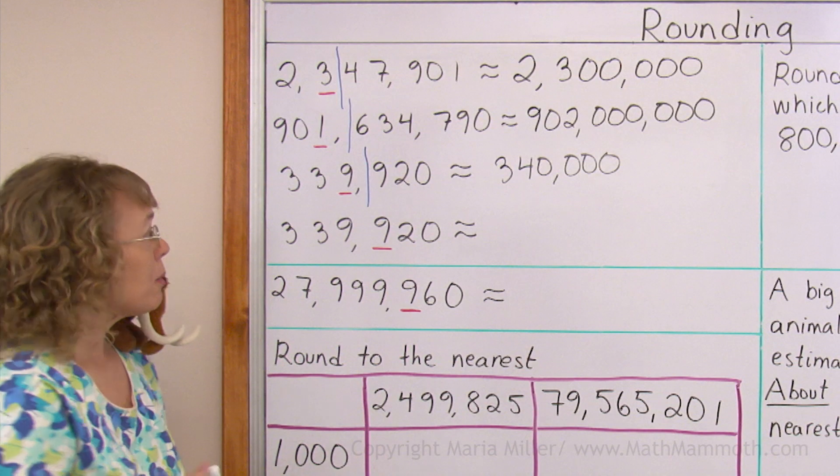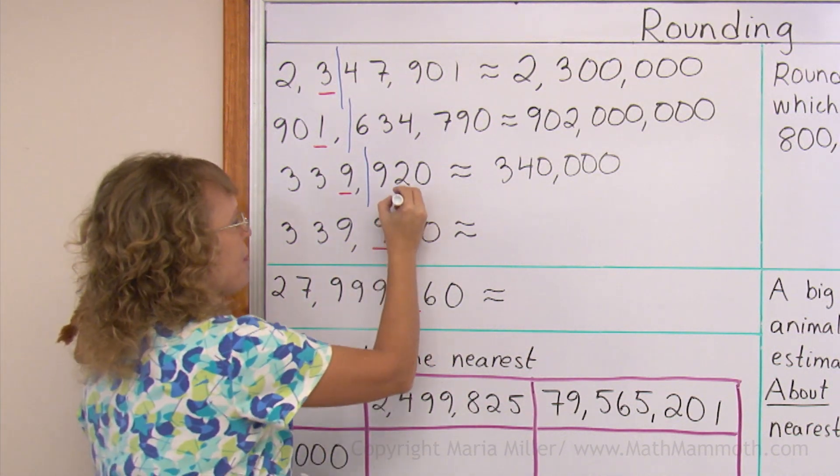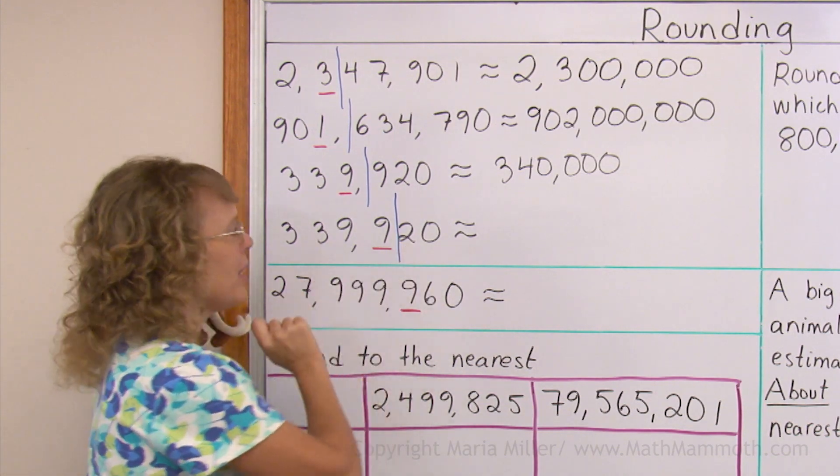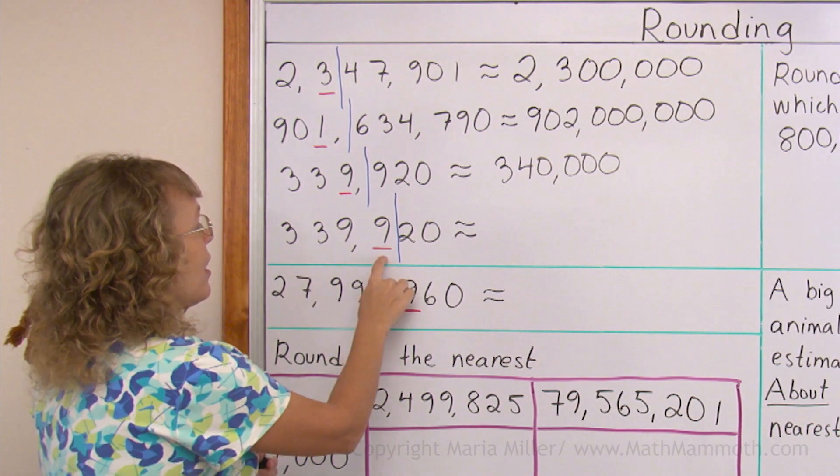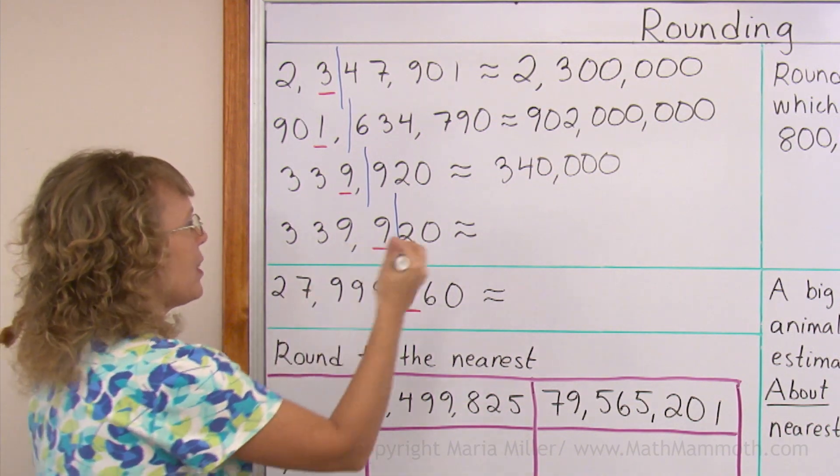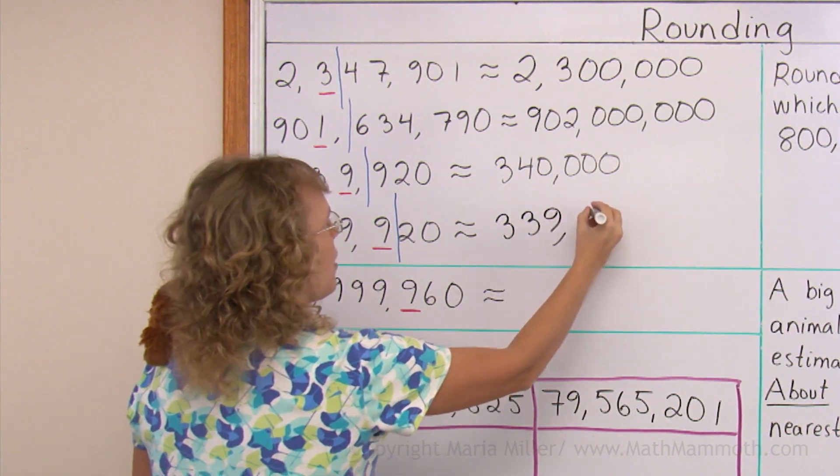Now the same number, but rounded to this place, hundreds place. Two here means we round down. So that's pretty easy now. This will not change and I'll just get 339,900.